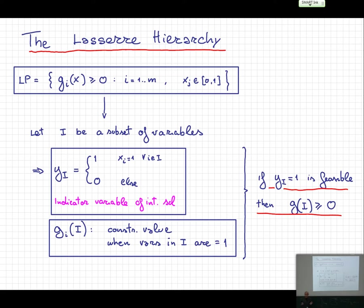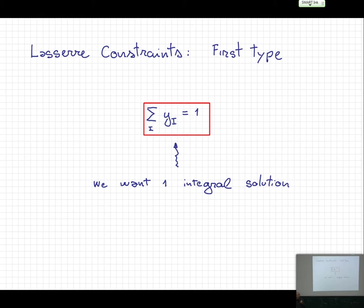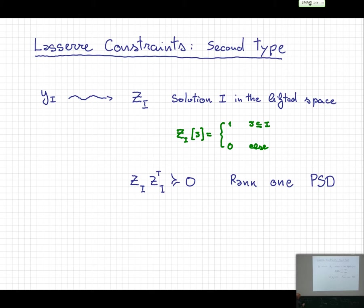What is the first constraint in the Lasserre hierarchy? It's a very obvious one: the sum of the indicator variables must equal one, meaning you want to select one integral solution. Now, an integer solution is not just an indicator variable — it's a zero-one vector corresponding to set I.